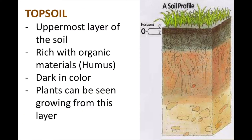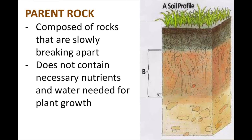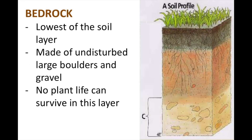Topsoil is the uppermost layer, composed mostly of minerals from parent material, with organic matter incorporated. It is a good material for plants and other organisms to live. Below the topsoil is the subsoil. It is rich in minerals that leak from the upper layers, and made up of loosely arranged rocks, sand, and clay. The next layer is the parent rock, composed of rocks that are slowly breaking apart, and this layer is where soil is developed. The lowest part of the soil is the bedrock. It is made up of undisturbed large boulders and gravel, and no plant life can survive in this layer.